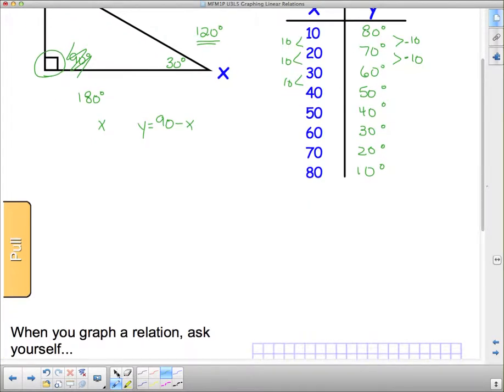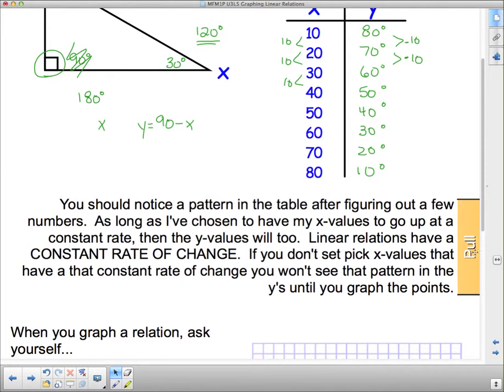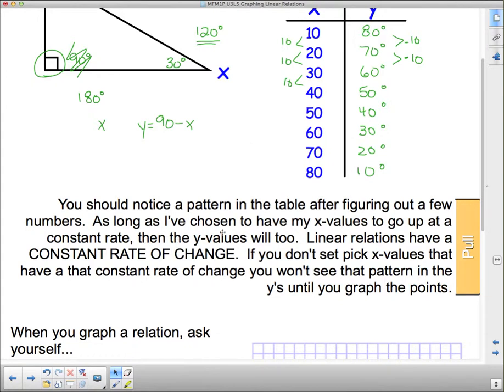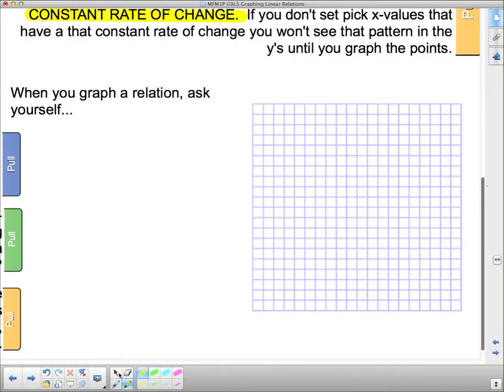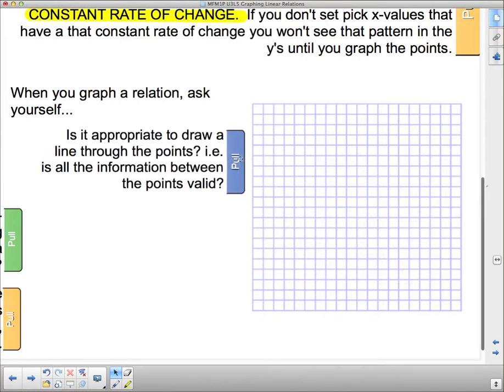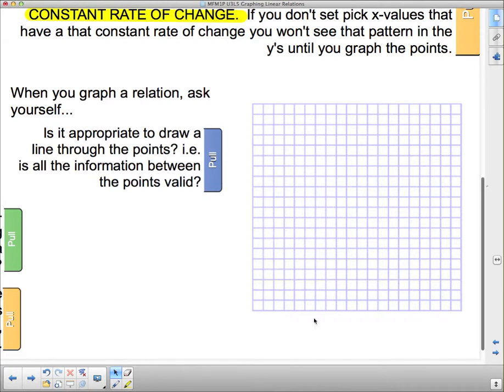So let's take a look. What does this pull tab say? This says, you should notice a pattern in the table after figuring out a few numbers, and we did. As long as I've chosen my x values to go up at a constant rate, which I did, then the y values will too. That happens in all linear relationships. Linear relations have a constant rate of change. If you don't set or pick x values that have a constant rate of change, then you won't see the pattern. So you need to make your x's because you're picking your x values. You need to pick x values that go up at a constant amount, and then you'll eventually see that the y's are going up or down by a constant amount too. So let's graph this relation. Now, what does this say? When you graph a relation here, you're going to ask yourself these three things. The first one you're going to ask yourself is, is it appropriate to draw a line through the points? I.e., is all the information between the points valid?